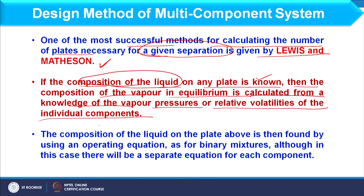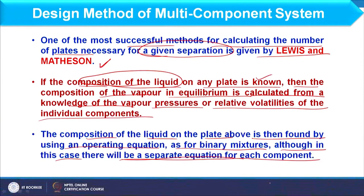Furthermore, the composition of the liquid on the plate above is then found by using an operating equation as for a binary mixture, although in this case there will be a separate equation for each component. In this way, we define the operating condition with respect to each component and calculate the liquid composition on the plate above. We will now demonstrate this method and illustrate the calculations using an example.